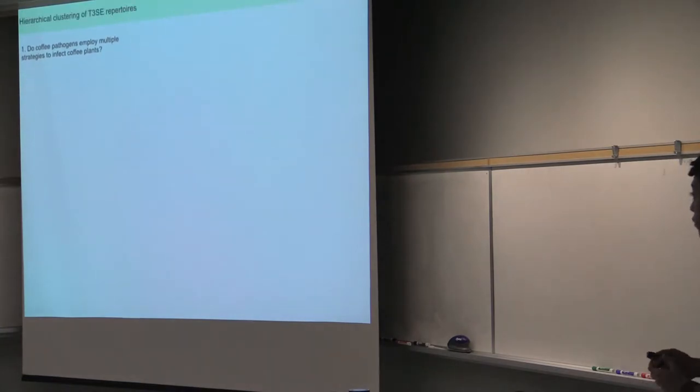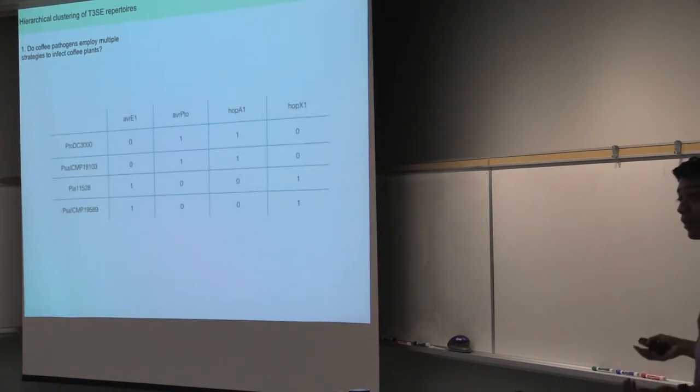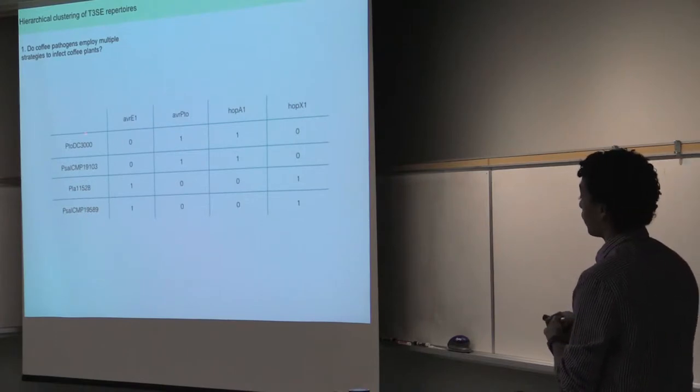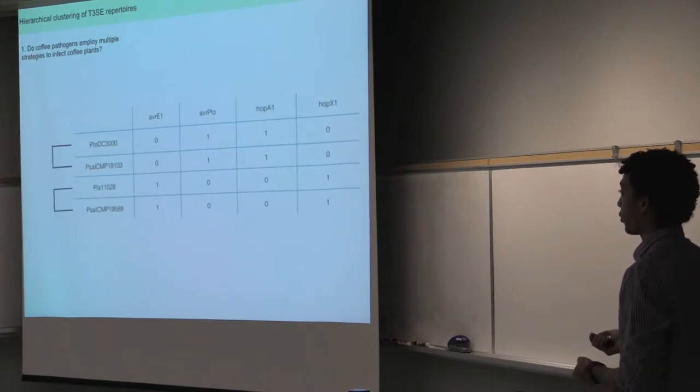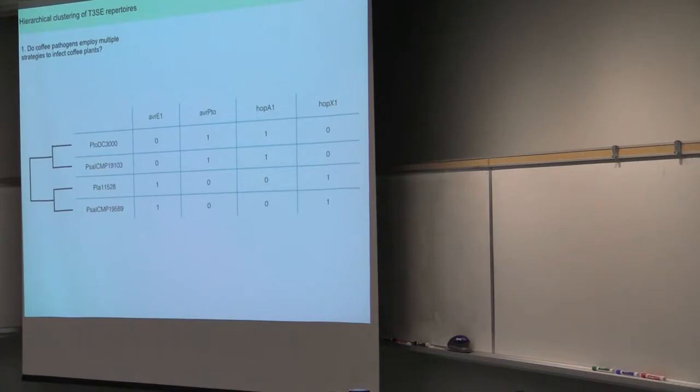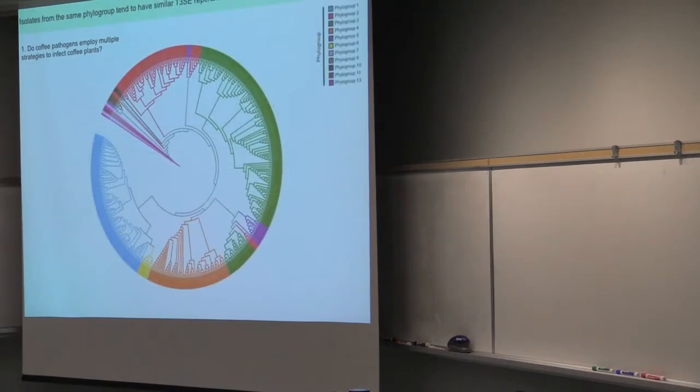So going to the first question, what we did here is just predict all the effectors for all the isolates that we have. And all we're doing here is clustering isolates that have similar effector profiles together. So here I'm showing effector families here at the top, isolates here at the left. And we're just clustering them hierarchically according to the way that their profiles show.